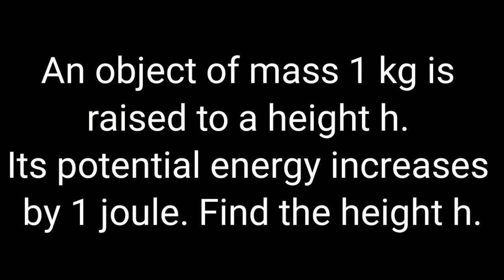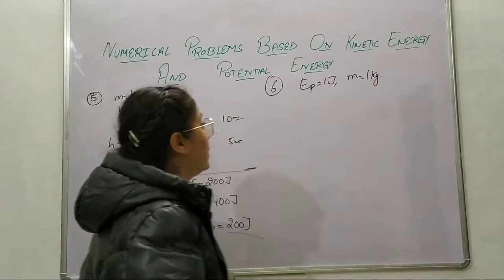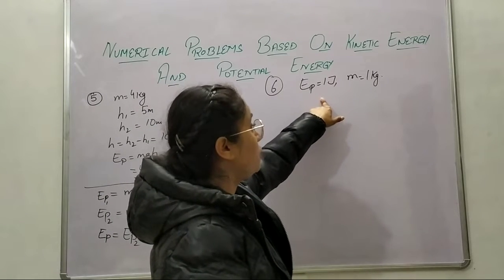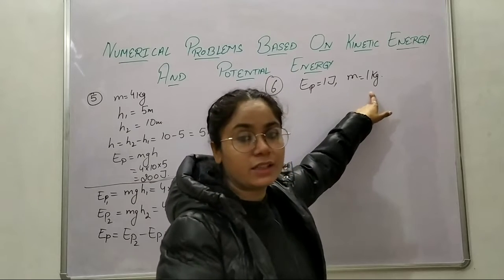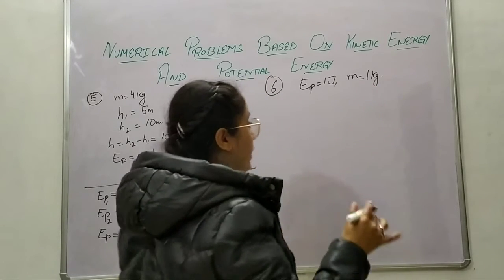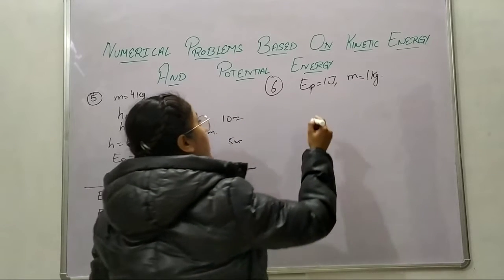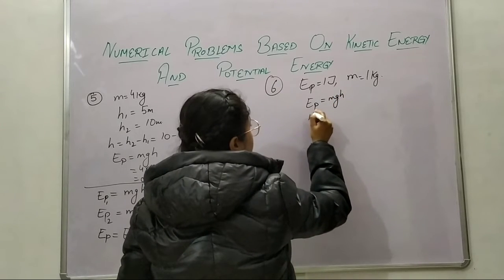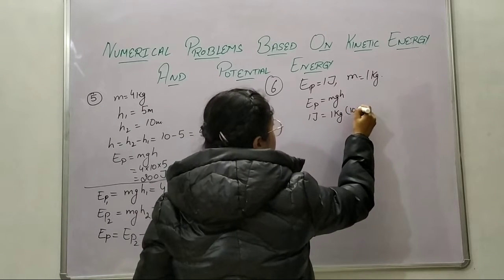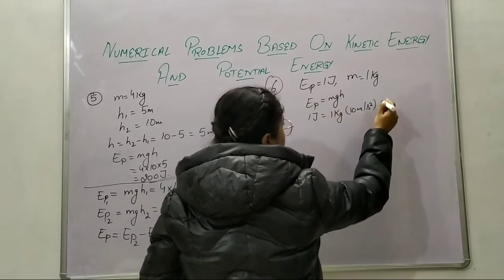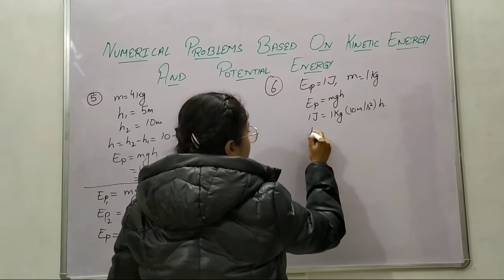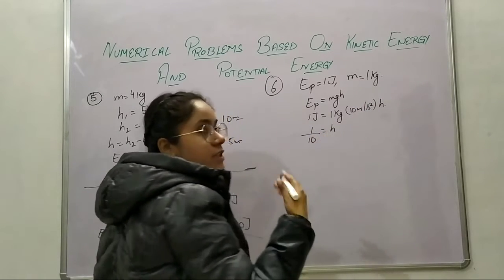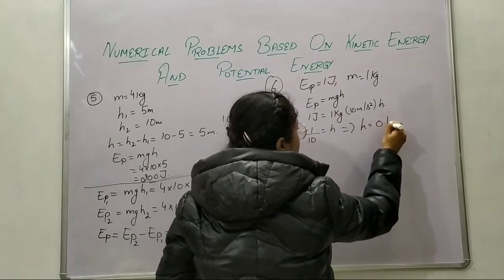Next problem: an object of mass 1 kilogram is raised through a height h. Its potential energy increases by 1 joule. Find the height. Using PE = mgh: 1 = 1 × 10 × h, so h = 1/10 = 0.1 meters. Simple as that.